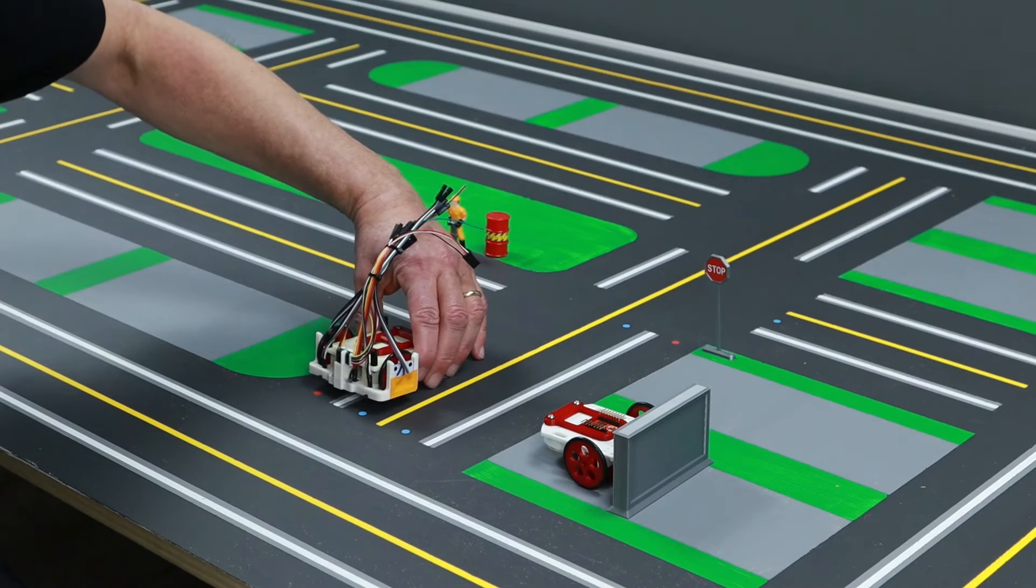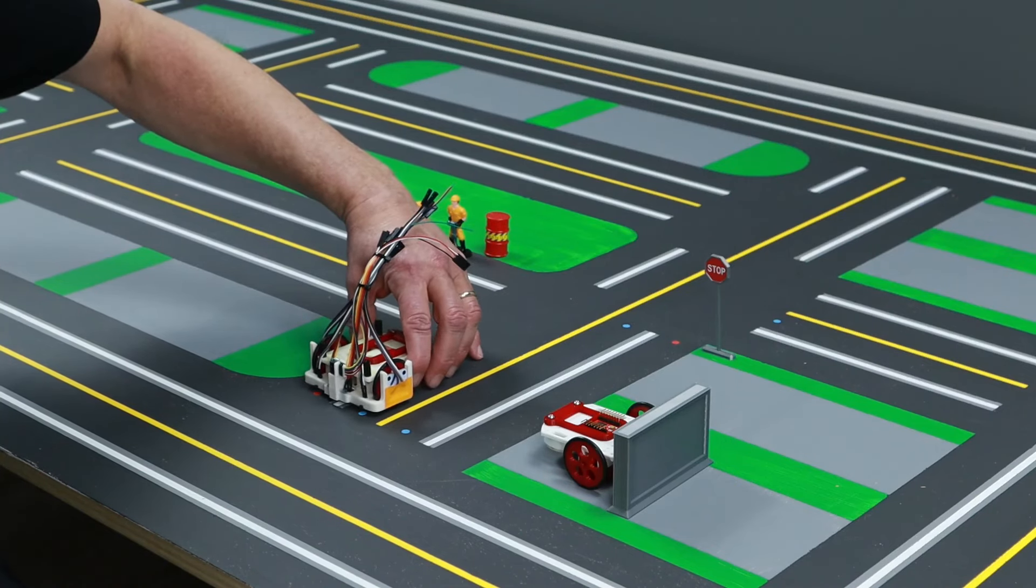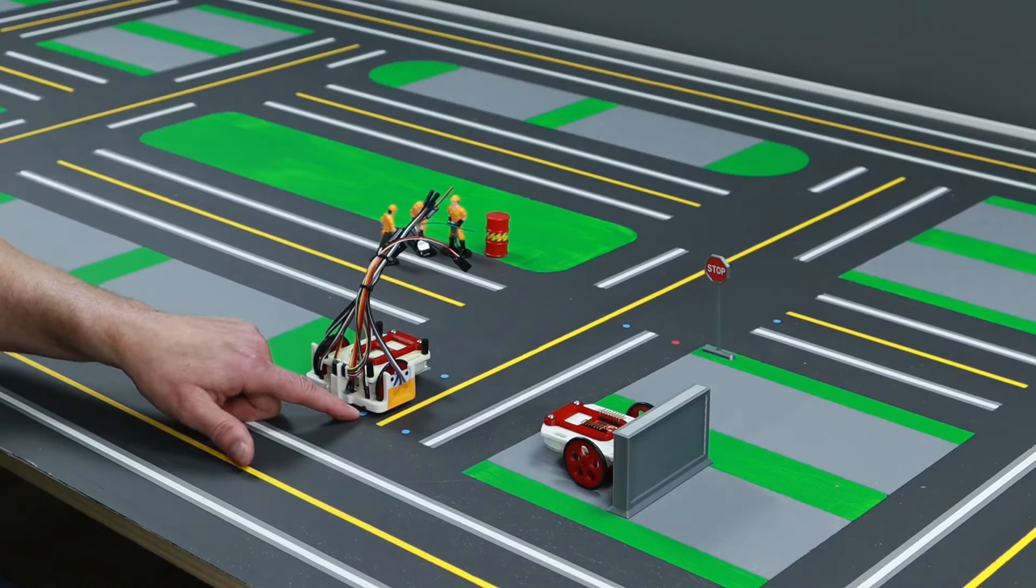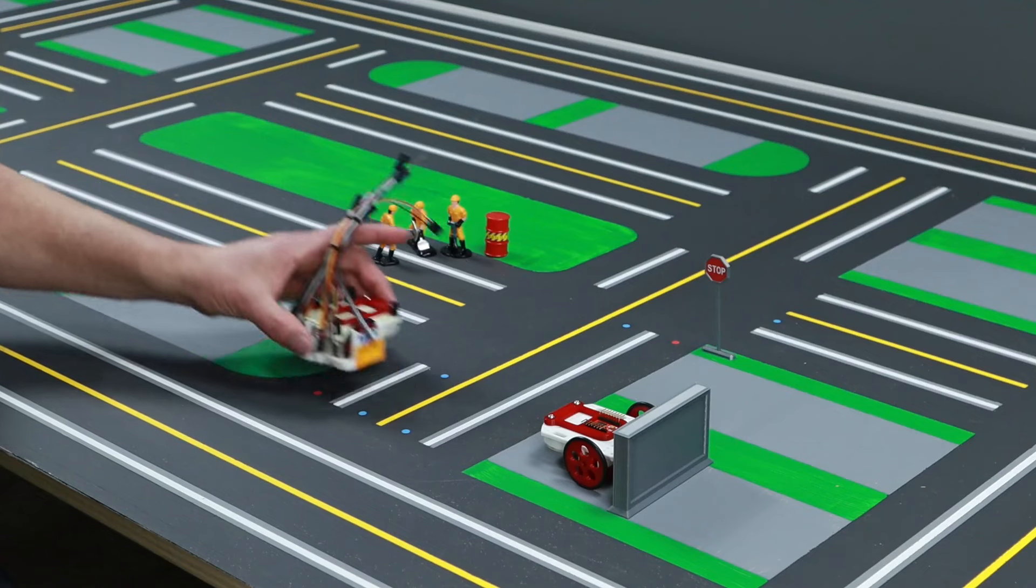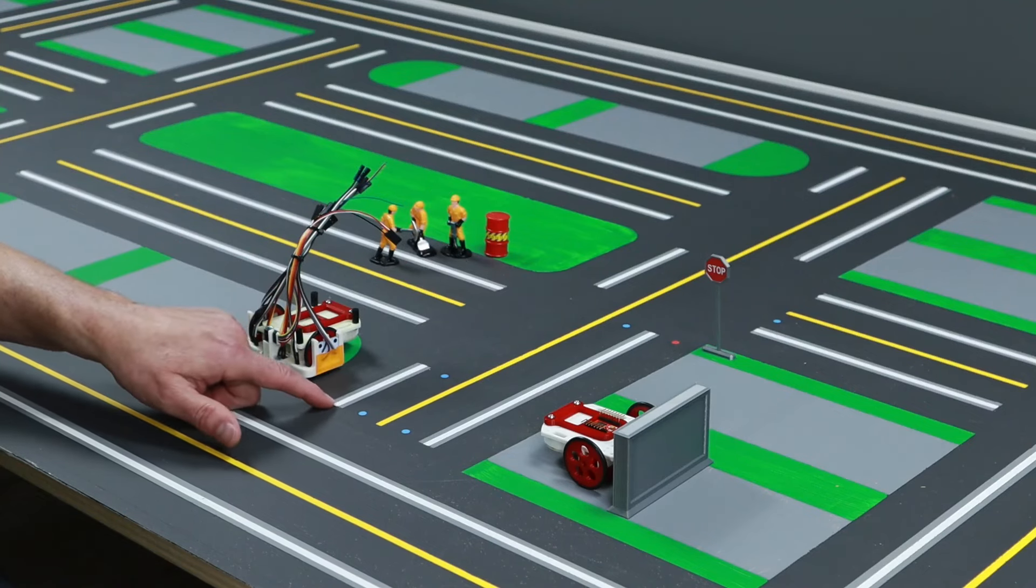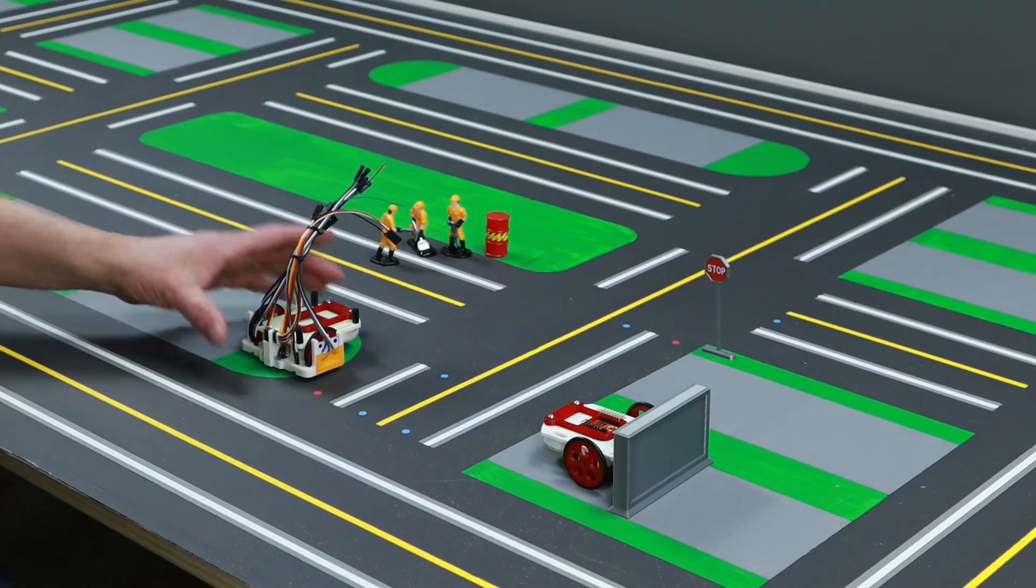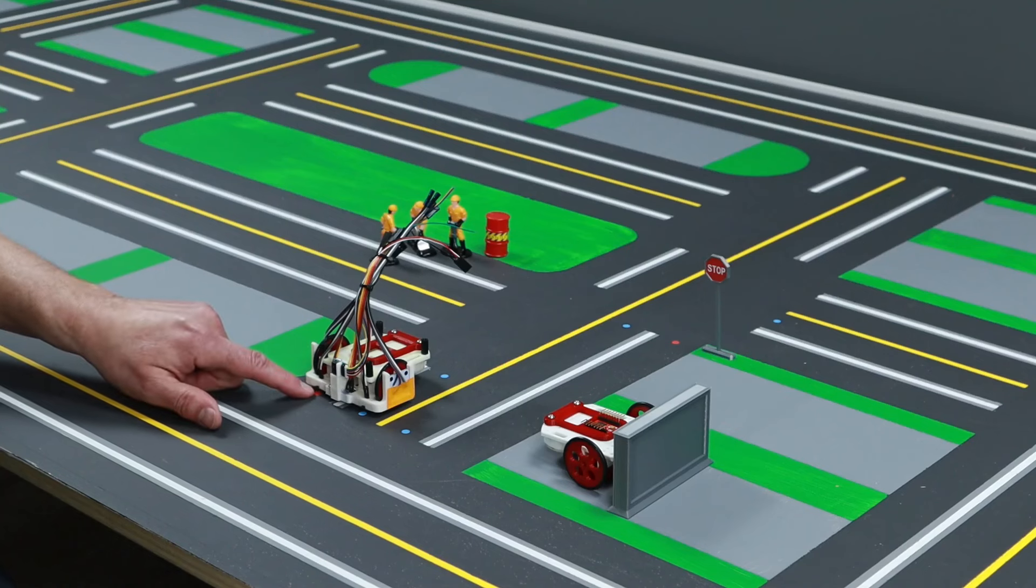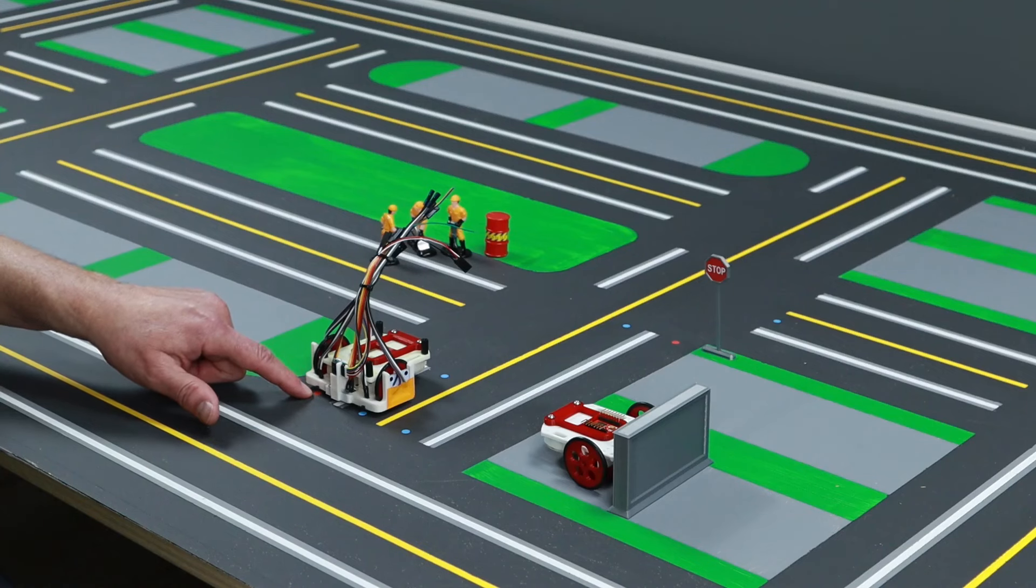Once it gets to this point, when it sees the blue dot, it knows that is the end of this line. That's going to be very important for localization. The other thing that it will see is the red dot in certain locations. And that will be an indicator of a stop. So that is my road sign.